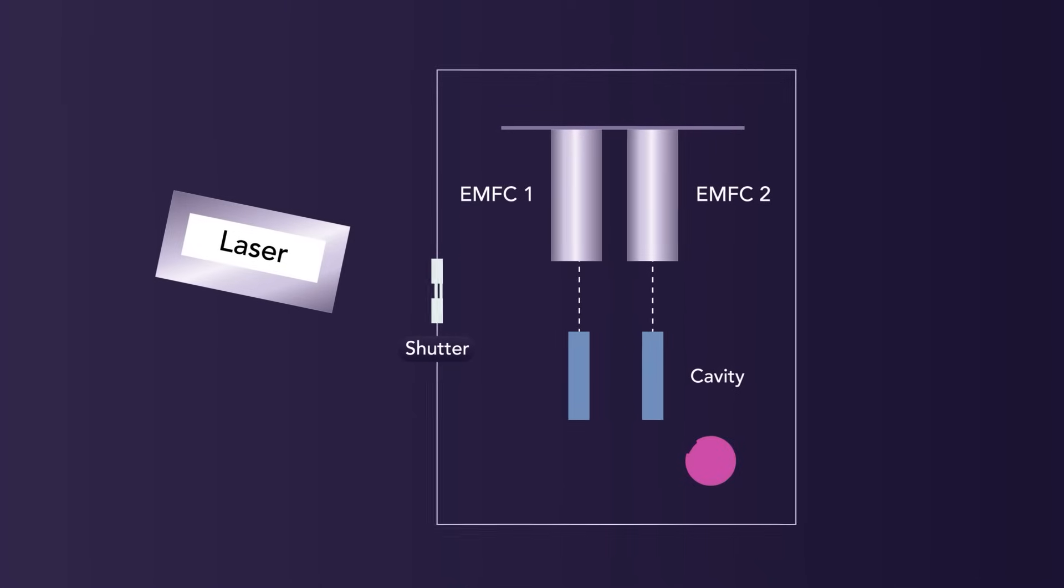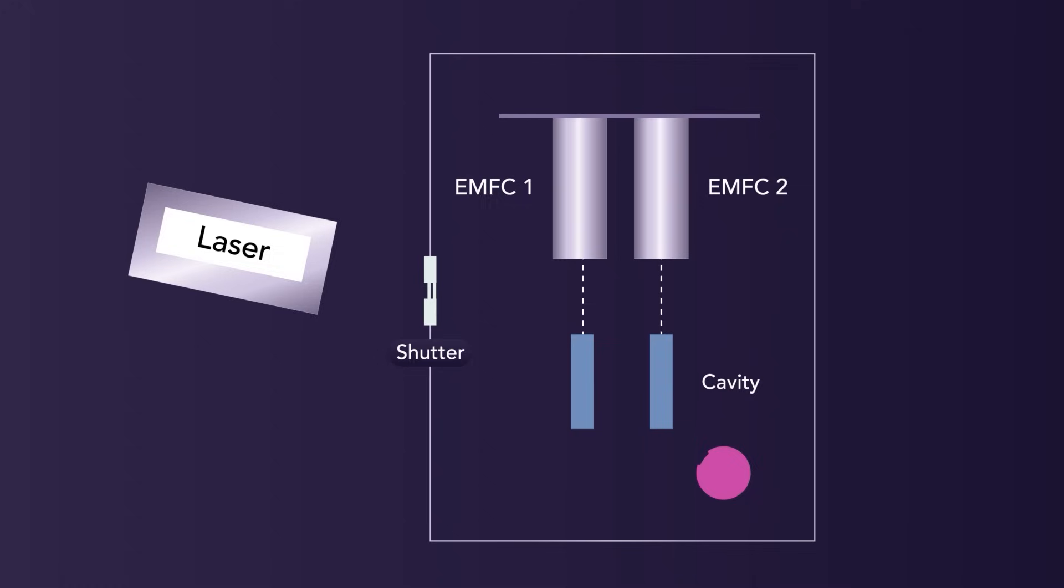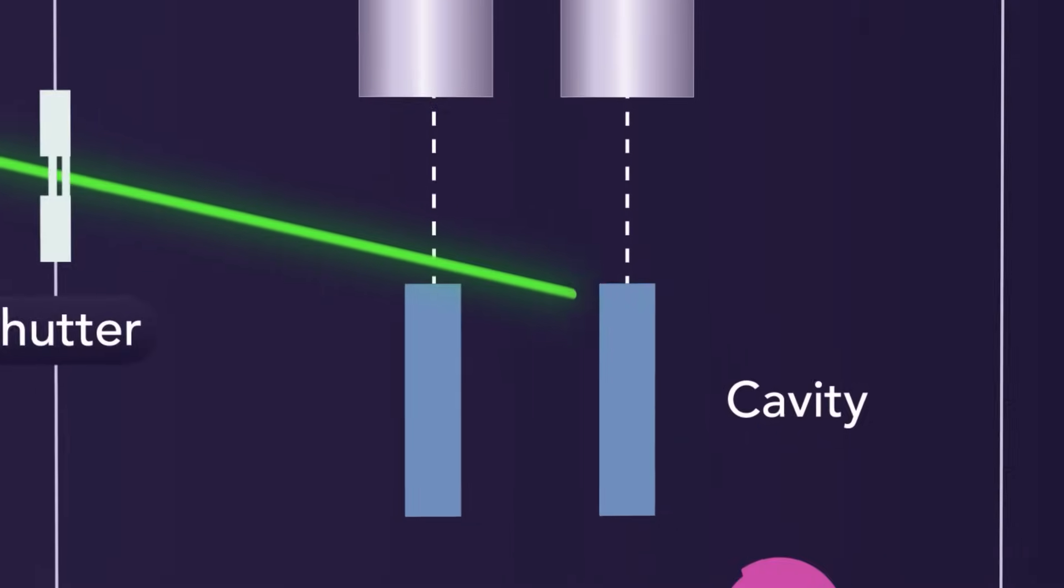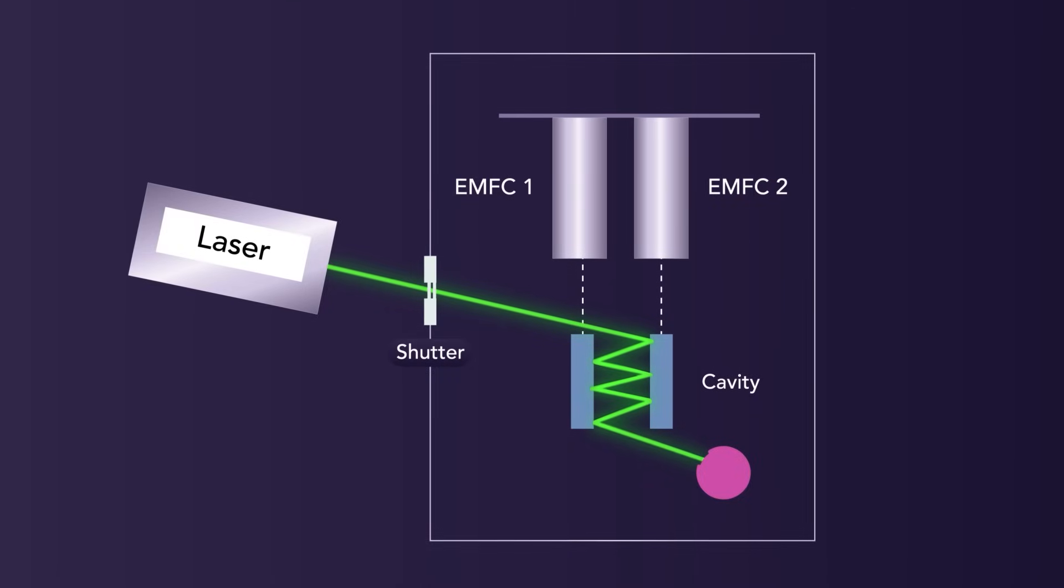Essentially, an optical cavity is an arrangement of two highly reflective mirrors placed opposite each other. When trapped inside, the photons in a pulsed or continuous wave laser beam will bounce between the mirrors, amplifying the total force exerted onto the mirrors after every reflection takes place.